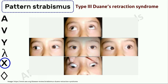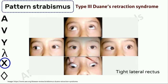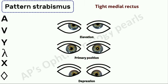In the X pattern, a relative divergence of the eyes is seen in both upgaze and downgaze compared to the primary position. It is seen when there is a tight lateral rectus, either from contracture following a large-angle exotropia or type 3 Duane's. When the eye attempts to adduct against a tight lateral rectus, it behaves like a leash; when the eye moves up, the muscle slips up causing the eye to move up and out, and the reverse happens in downward movement. The diamond pattern strabismus is due to a tight medial rectus, where there is a relative convergence in upgaze and downgaze.